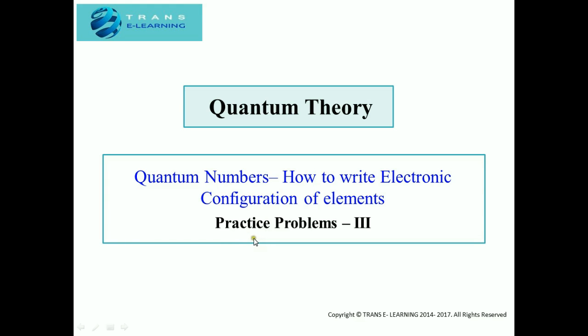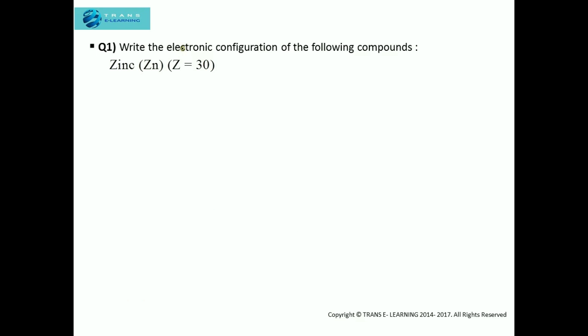Hello everybody, welcome to TransE Learning chemistry videos. Today we'll be discussing quantum numbers, and in that we'll be covering practice problems related to how to write electronic configuration of elements. We'll be covering the following: write the electronic configuration of zinc, which has atomic number 30.